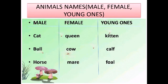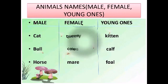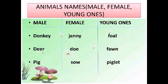Next is horse — female: mare, young: foal. Next we have donkey — female: jenny, young: foal.